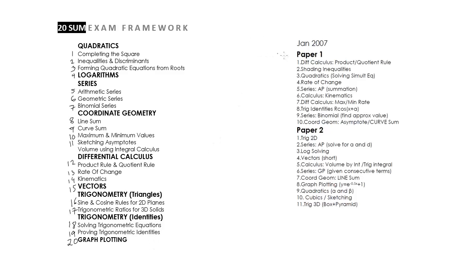If you take a look at Jan 2007 Paper 1, we have differential calculus product rule given in Paper 1, so it would not be repeated in Paper 2. Usually there is quotient rule with it, but sometimes the quotient rule can be given in another question. Then we have shading inequality that falls under coordinate geometry, coordinate geometry sketching, and then we have quadratics.